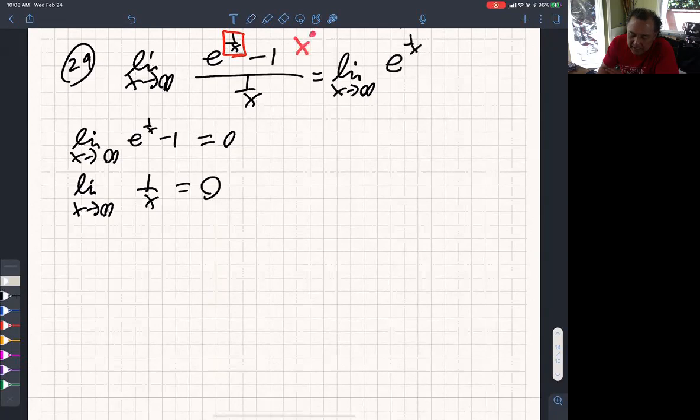Note, box is x to the negative 1. The derivative of that is negative 1 times x to the negative 2.